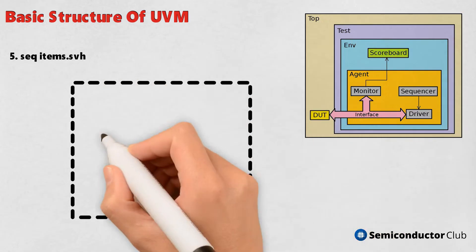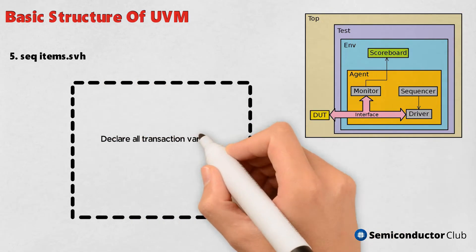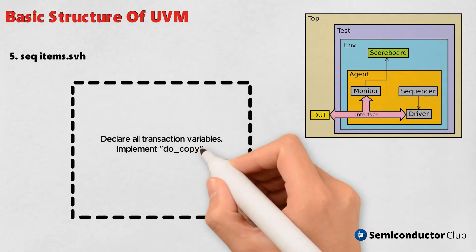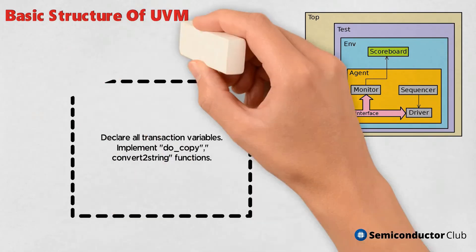5. Seq_item.svh - Declare all transaction variables. Implement do_copy, convert to string functions.